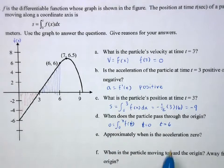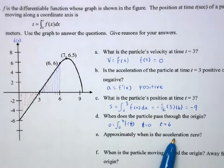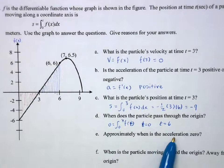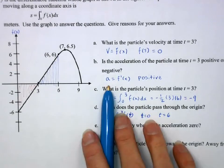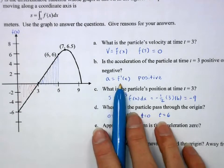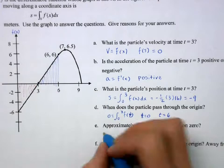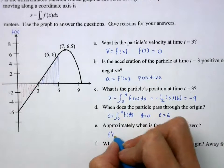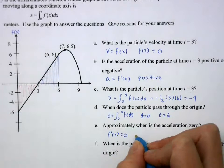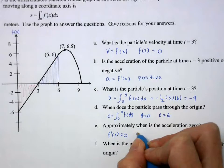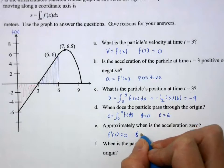Approximately when is the acceleration 0? Since acceleration is f prime, we want when f prime equals 0 — that's when the slope of f is 0, which is at approximately t equals 7.